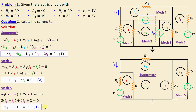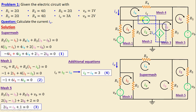To get the two additional equations, we focus on the current source Is. We write: Is = i2 − i4. Since Is = 3 amps, we obtain equation 4: i2 − i4 = 3.